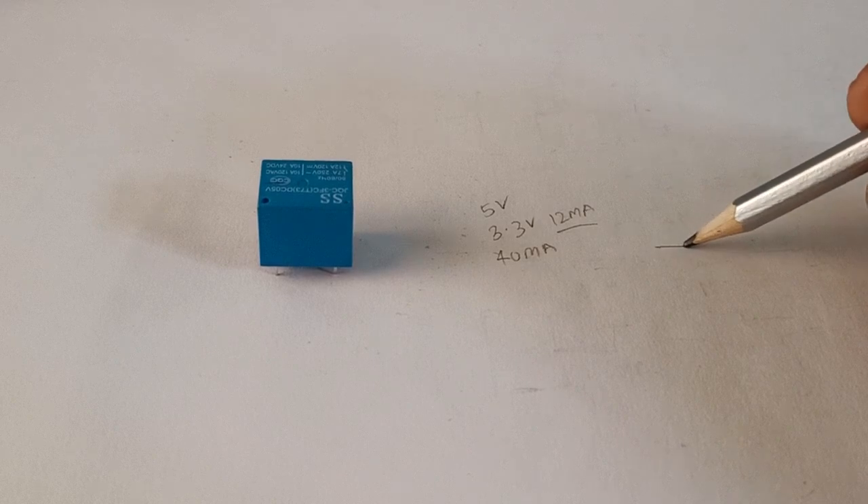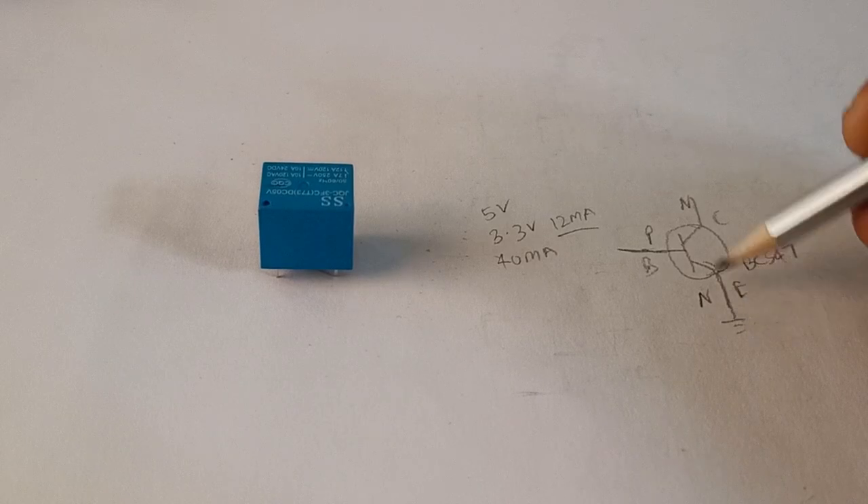In order to turn on this relay, we require to amplify the current. For that we require a device called a transistor. This is a transistor, BC547. This is base, this is emitter, this is collector. It's an NPN type transistor, meaning if we give positive to the base and negative to the emitter, it will switch to the collector.